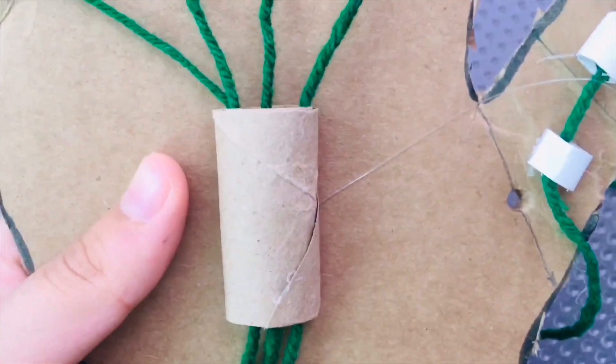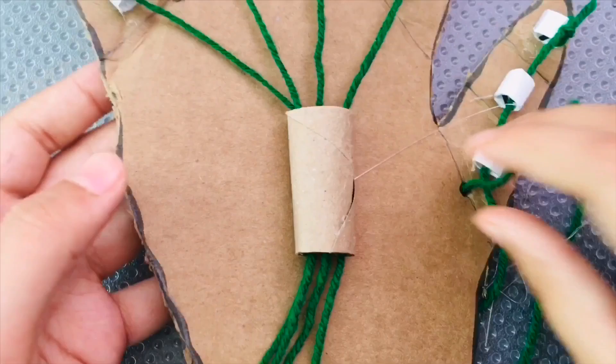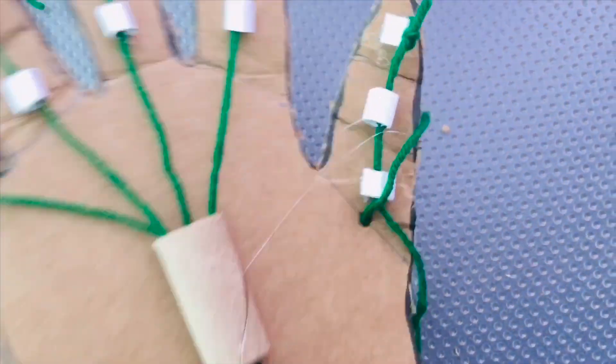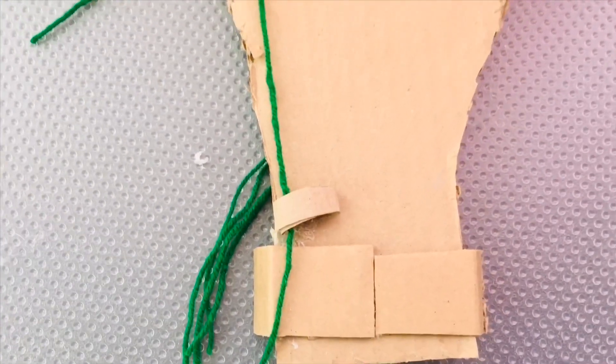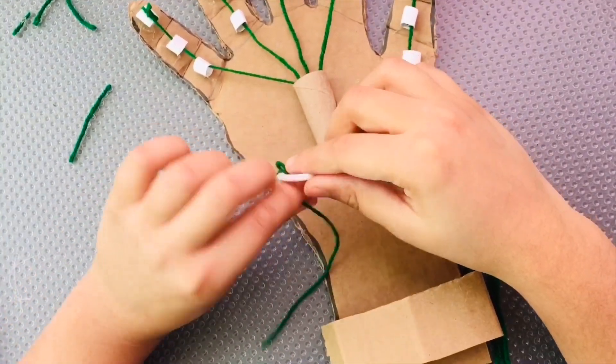Now, make a hole and pass the string from the thumb through it. Take a big straw, glue it, and then pass the thumb string.